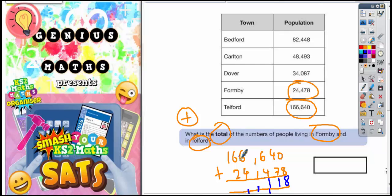6 plus 4 is 10, plus 1 again is 11 again. So you put the 1 in, carry the 1. 6 plus 2 is 8, plus the 1 we've carried is 9. And then we've got a 1 plus nothing on the end, which is just 1. So your final answer should be 191,118.